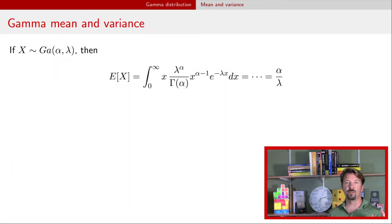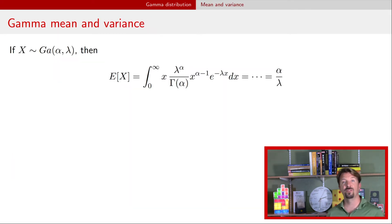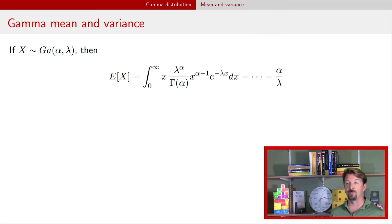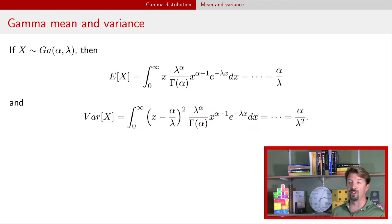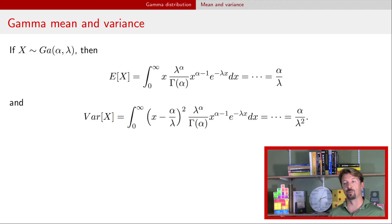We can calculate from the PDF the mean or expectation of that gamma random variable. It turns out to be the shape parameter divided by the rate parameter. The variance turns out to be the shape parameter divided by the rate parameter squared.